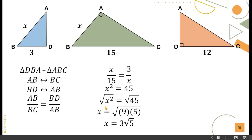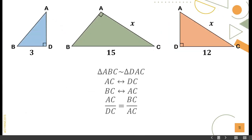Take the square root of both sides. Square root of X squared equals square root of 45. Since 45 is not a perfect square, find its factors: 9 and 5. Square root of 9 is 3, and square root of 5 remains inside the radical. Therefore, X is equal to 3√5.